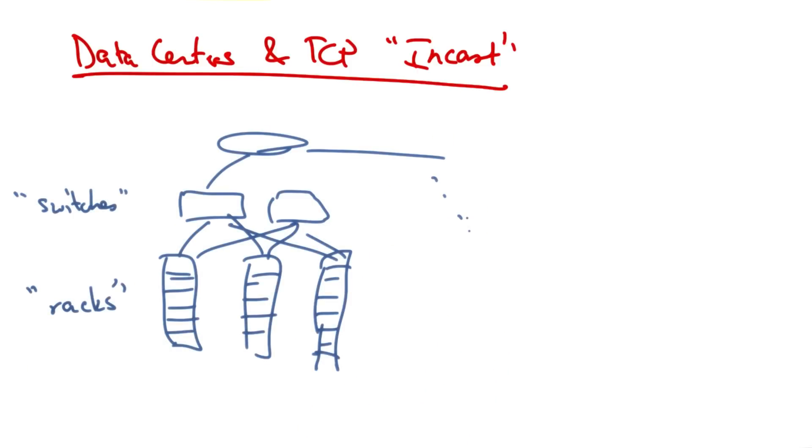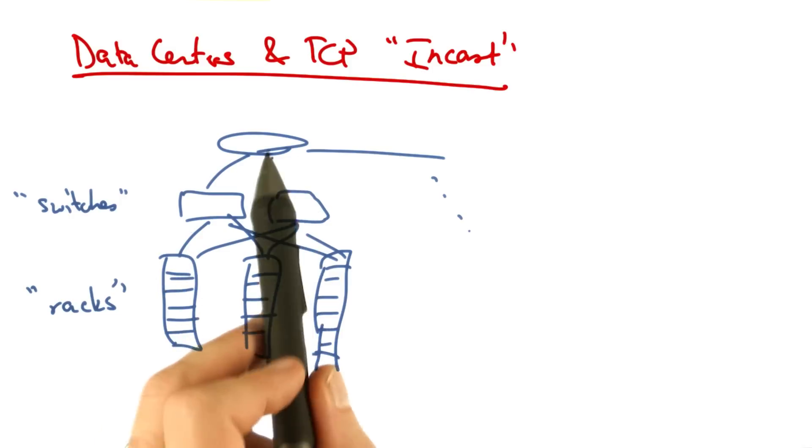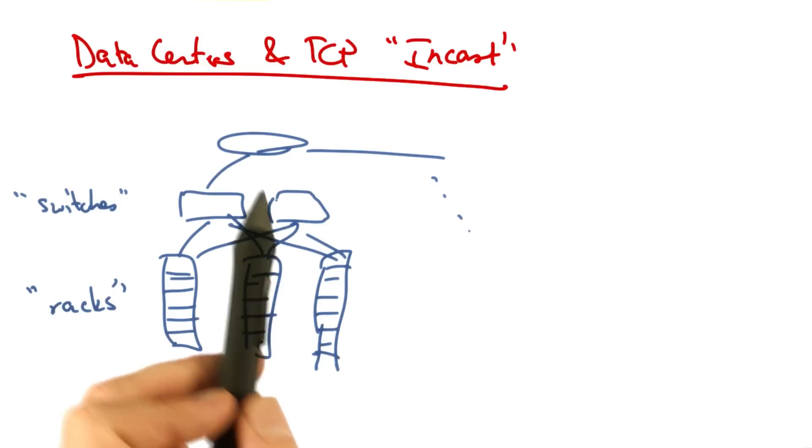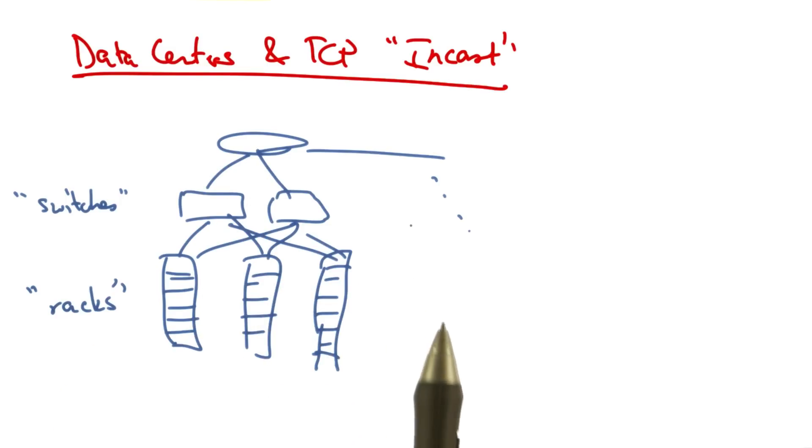A typical data center consists of a set of server racks, each holding a large number of servers. The switches that connect those racks of servers, and the connecting links that connect those switches to other parts of the topology.